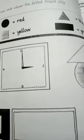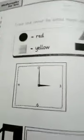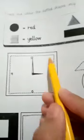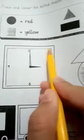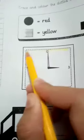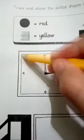Trace. Now we have to color. We have yellow. We will outline and then we will color.